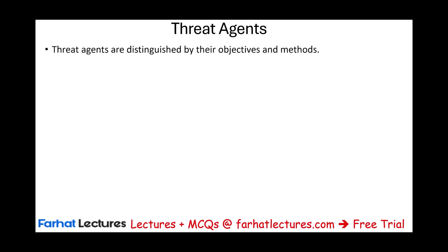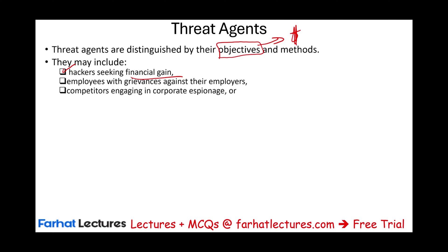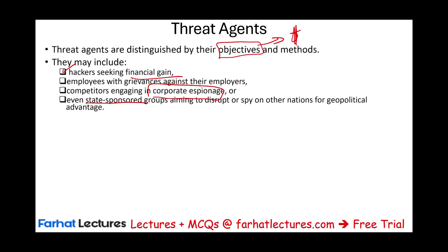Threat agents are distinguished by their objectives and the methods they use. Usually, most of the time, it's financial gain, but it doesn't have to be. They might include hackers seeking financial gain — that's the majority, that's what they do for a living. It could be an employee with grievances against their employer. You could have an attack by a competitor engaged in corporate espionage, or just trying to drive you out of business. And sometimes those threat agents could be state-sponsored groups — some countries have groups that carry on cyber attacks against other countries, other companies, or individuals in other nations.